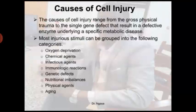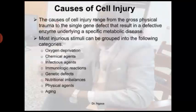The causes of cell injury tend to range from gross physical trauma to a single gene defect that results in a defective enzyme underlying a specific metabolic disease. These causes have been grouped into many categories: oxygen deprivation, chemical agents, infectious agents, immunological reactions, genetic defects, nutritional imbalances, physical agents, and aging.